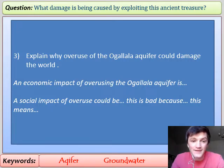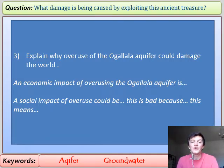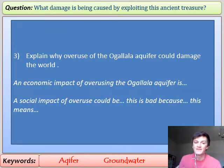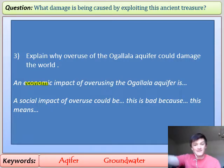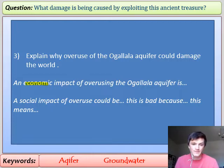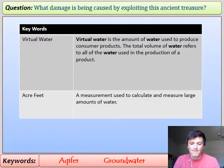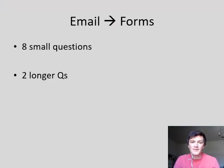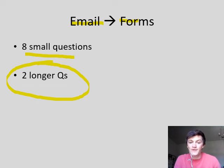Now write at least two paragraphs explaining why the use of the Ogallala Aquifer could cause damage to the world. Think about an economic impact — what will happen to wheat prices? — and a social impact — what about a farmer in Nebraska who can no longer grow crops, where might he have to move? Use connectives like 'this means that' and 'this is bad because' to develop your ideas. Also write down the two definitions from the slide. Then go to your email, open Forms, and complete the eight short questions and two longer questions. See you soon — goodbye.